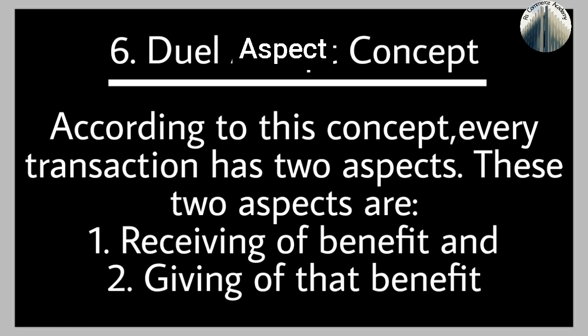What are the two aspects? One is receiving a benefit, and one is giving off that benefit. Every transaction involves both receiving and giving. Because of this, we make a double entry for every single transaction between two accounts.